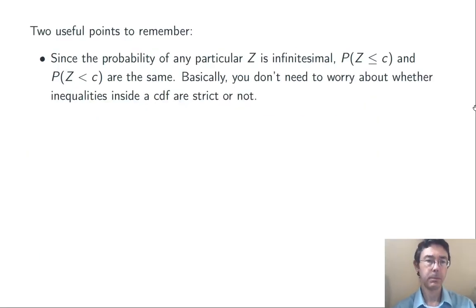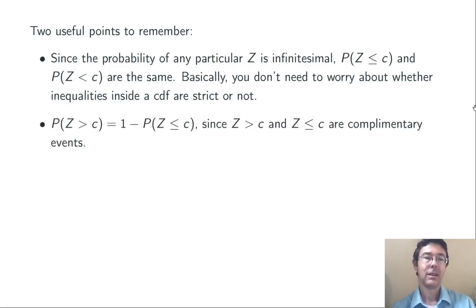Two useful facts to keep in mind. The probability of any individual value, any individual z-score, is infinitesimal. So, the probability that z is less than or equal to c, and the probability that z is less than c, are the same. It doesn't matter whether the inequalities inside of a CDF are strict or not. The probability is going to be the same. Secondly, remember that P(z > c) = 1 - P(z ≤ c), because z > c and z ≤ c are complementary events. One of those two things has to happen, and they can't both happen.